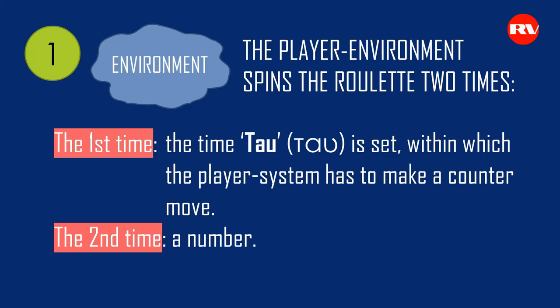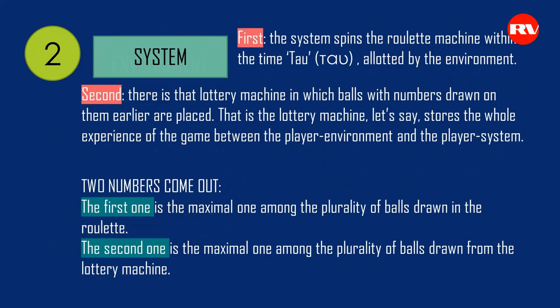Next comes the second step of the game. Now the lottery machine is rotated by both players, the environment and the system. The system spins the roulette machine within the time tau allotted by the environment. There is that lottery machine in which balls with numbers drawn earlier are placed — the lottery machine stores the whole experience of the game between the player environment and the player system.